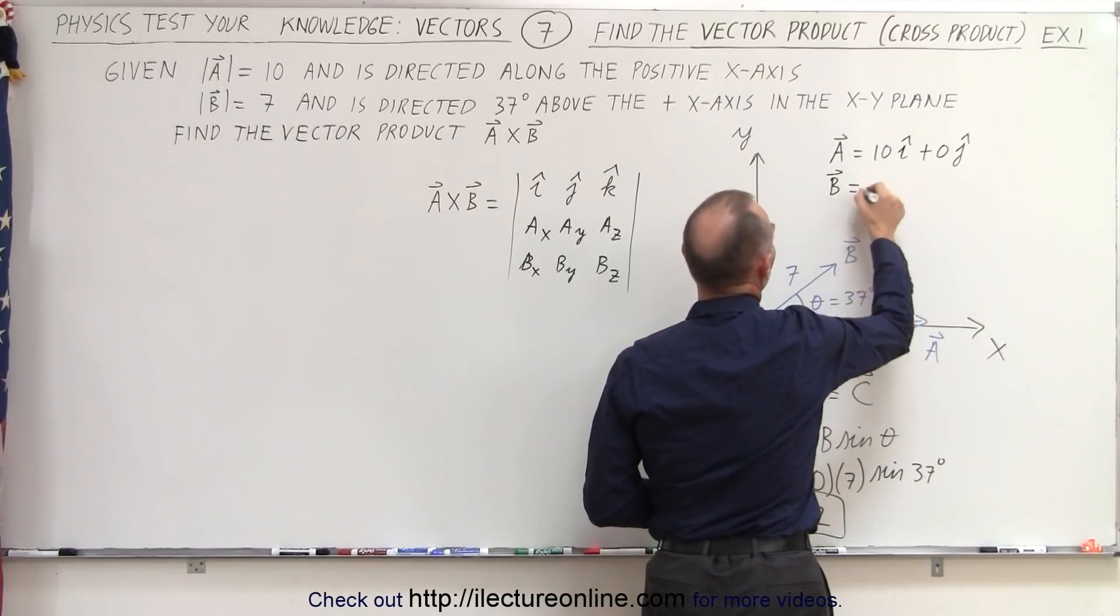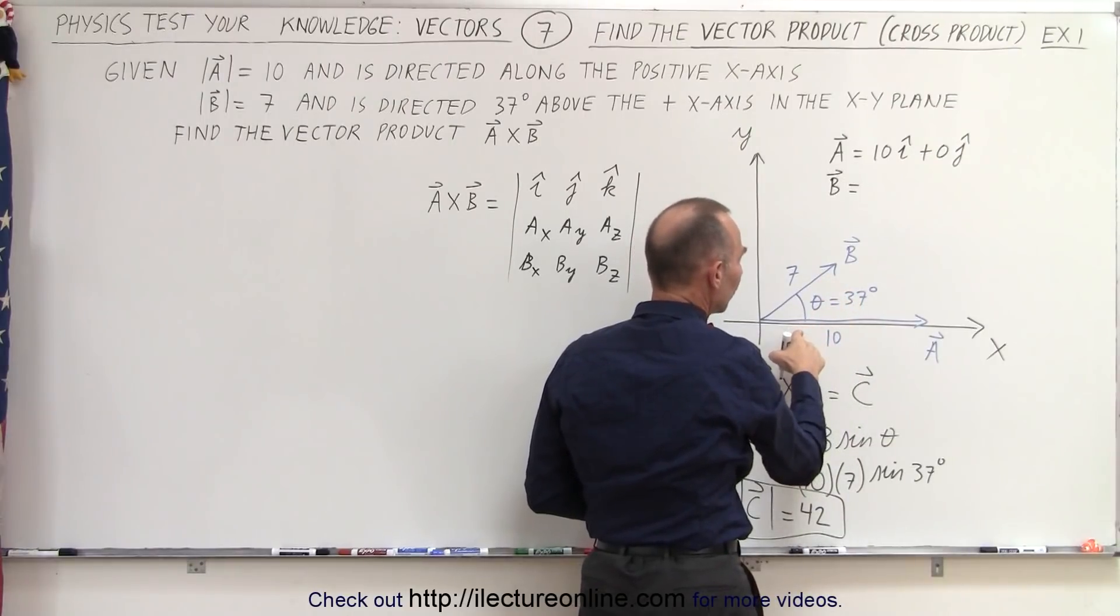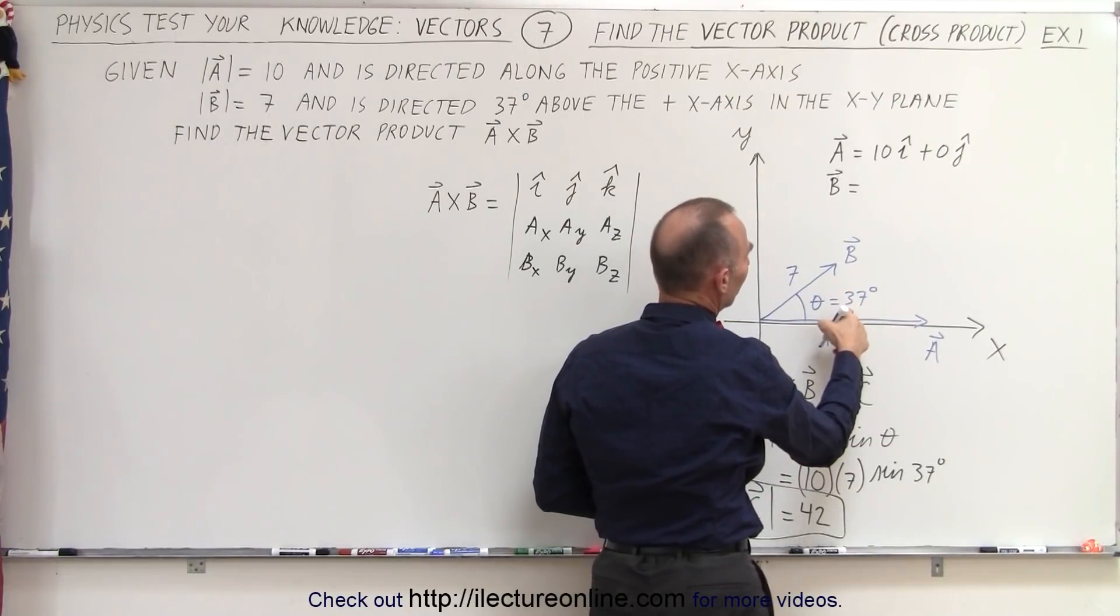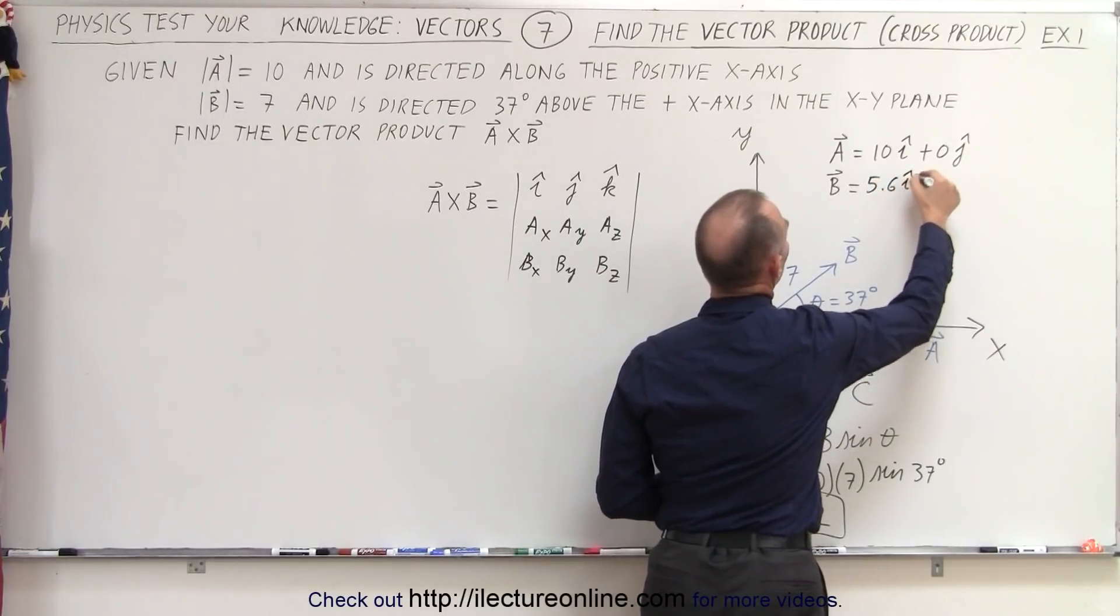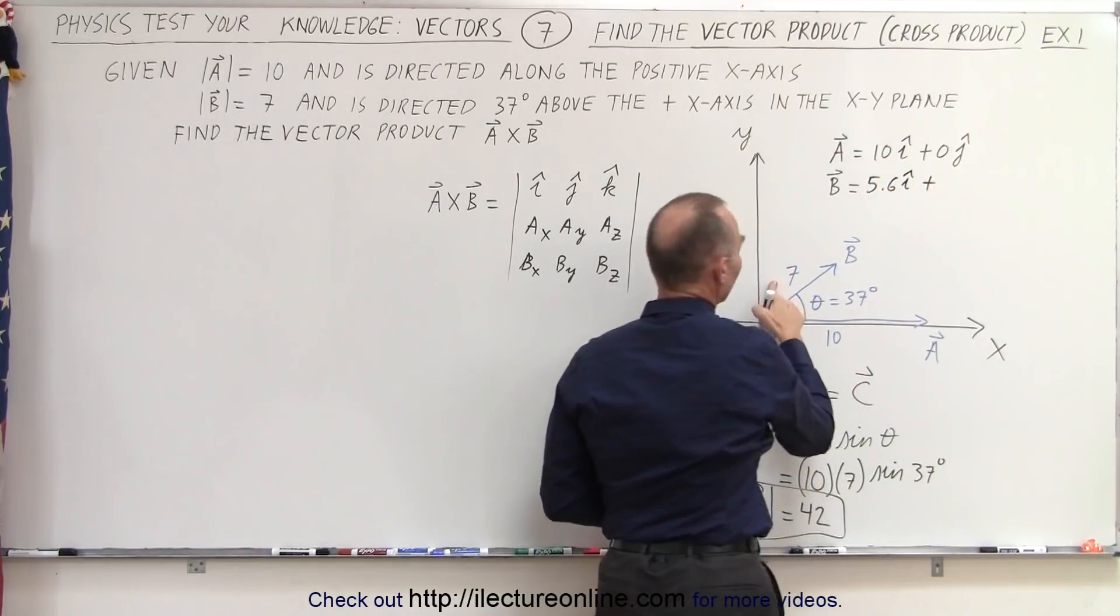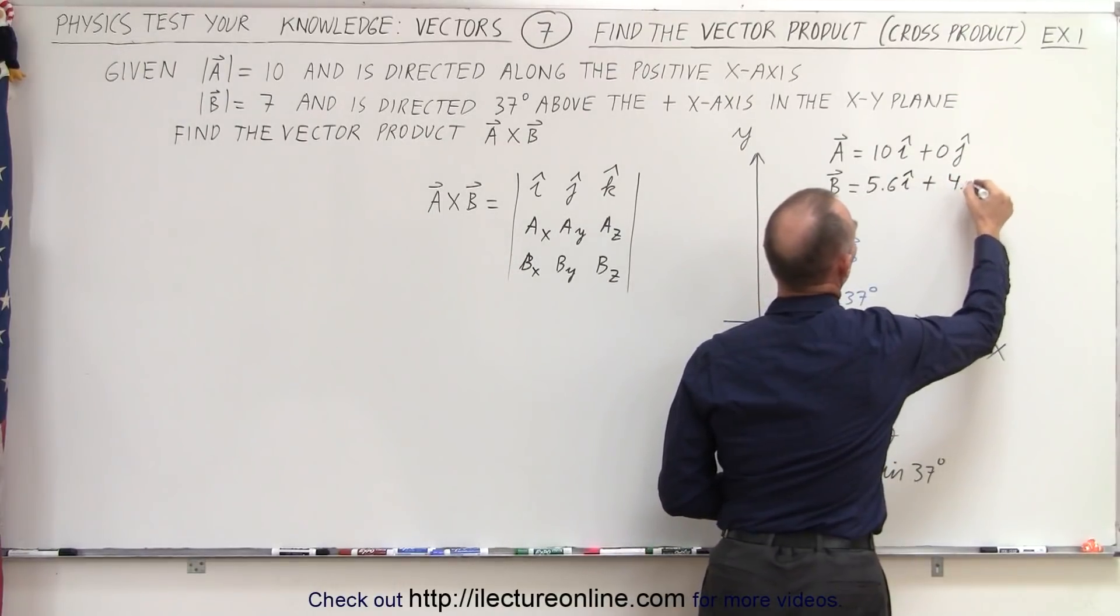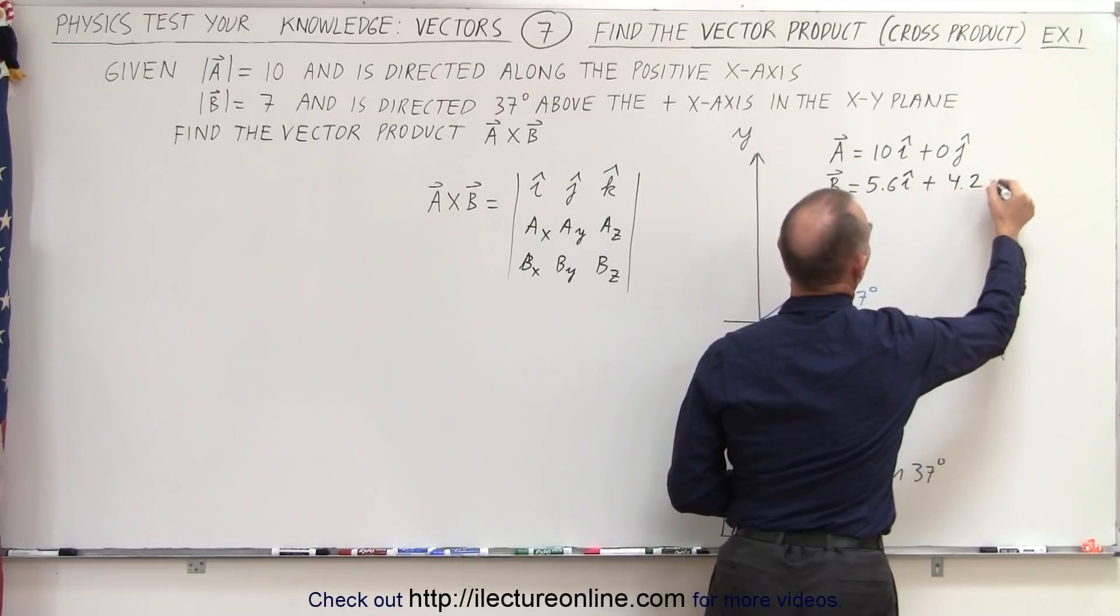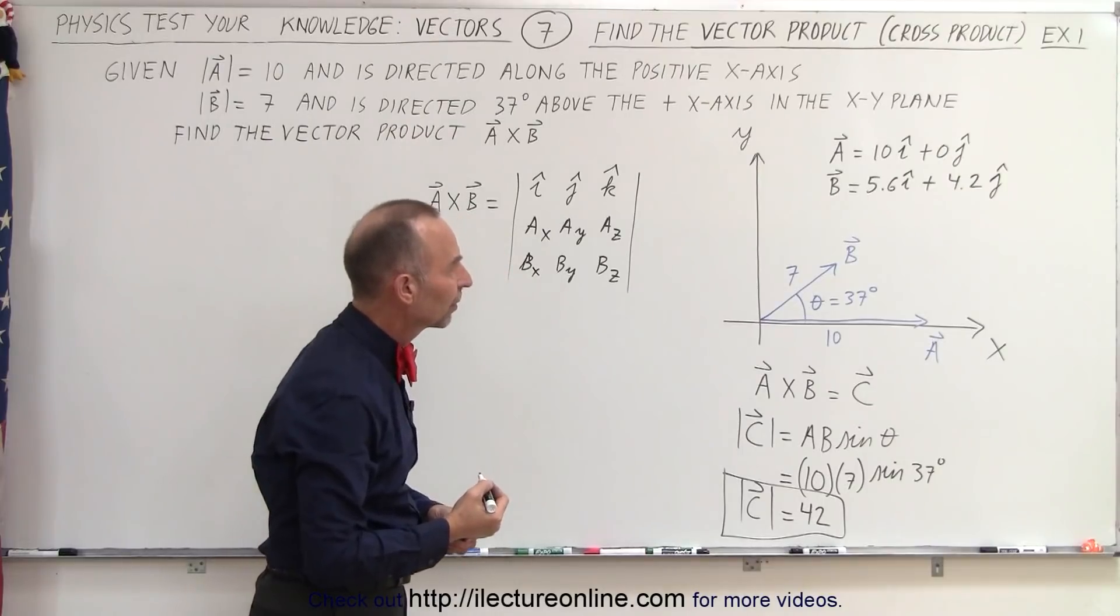That's equal to 7 times the cosine of 37 degrees, which is 0.8. 0.8 times 7 would be 5.6 in the I direction, plus 7 times the sine of 37. That would be 4.2 in the J direction.